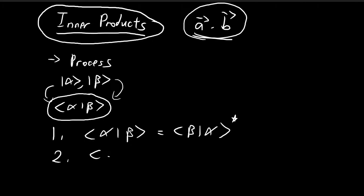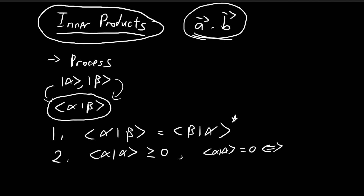The second rule is that the inner product of a vector with itself must always be greater than or equal to zero. Equality holds — meaning the inner product equals zero — if and only if alpha is equal to the null vector.